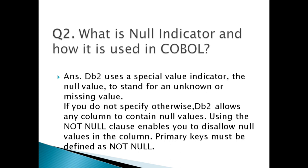Question two: What is a null indicator and how is it used in COBOL? DB2 uses a special null value to stand for an unknown or missing value. If you do not specify otherwise, DB2 allows any column to contain null values. Using the NOT NULL clause enables you to disallow null values in the column. Primary keys must be defined as NOT NULL. Nulls do not satisfy any condition in an SQL statement other than the special IS NULL predicate.